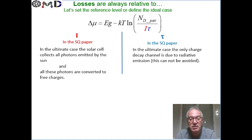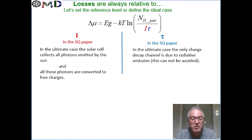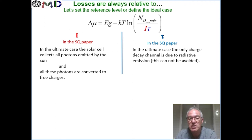In this ideal case, all the photons that are emitted by the sun are absorbed by the solar cell and vice versa, and also every photon that is absorbed is directly converted to free electrons and holes. On the lifetime side, the assumption is that there are only radiative recombinations — the emission associated directly with the absorption, per the Einstein A and B coefficients.